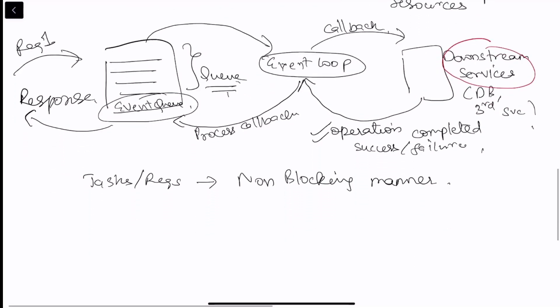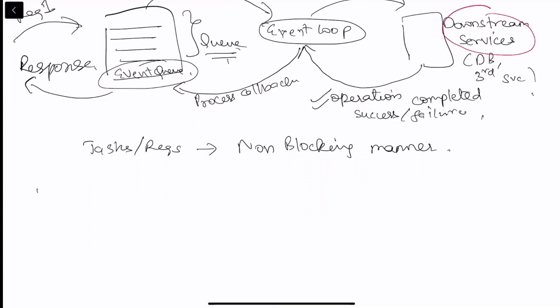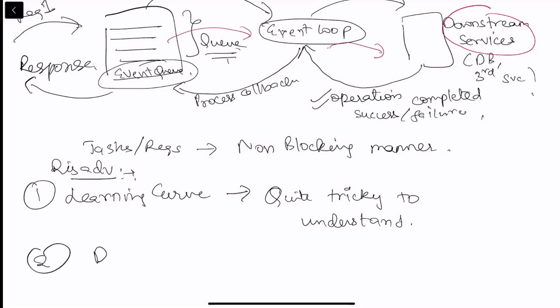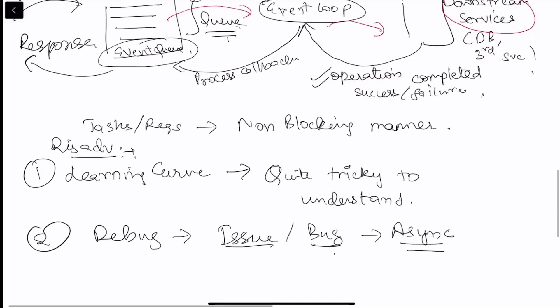But there are certain disadvantages while using the reactive paradigm. So the one, the foremost one is the learning curve. The reactive paradigm, if you see in the spring web flux world, it's quite tricky to understand. And especially for those who are accustomed to the imperative style of programming. Along with this, as we saw that the work is done in an asynchronous manner. It's quite hard to debug any issue or a bug in the system. Because everything is in async manner. So the flow becomes hard to understand.